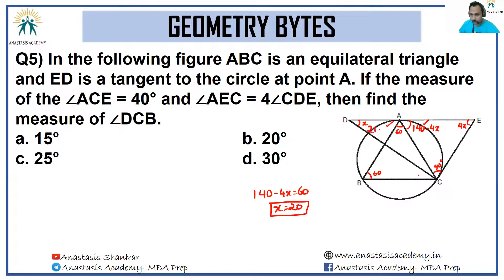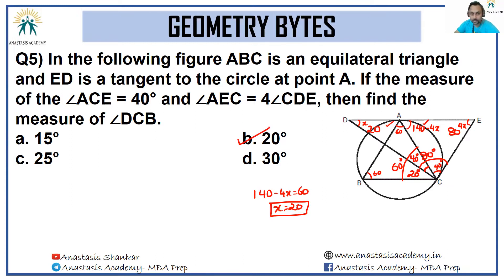Since x = 20, angle AEC = 80°, and the full angle at that vertex is also 80°. Angle DCA = 40°, and the full angle ACB = 60°, so angle BCB — the required angle — is 60 minus 40 = 20 degrees. The answer is option B, 20 degrees. That's all for this episode; hopefully you learned something.